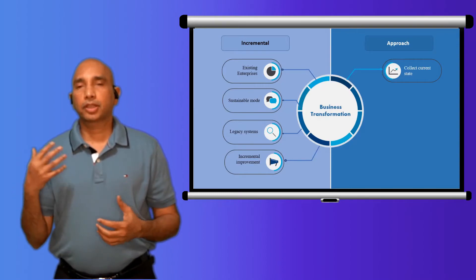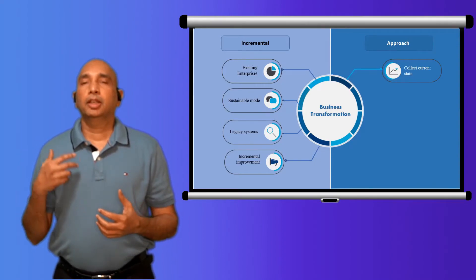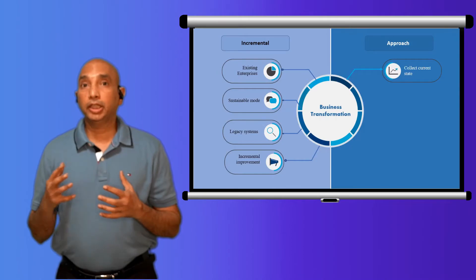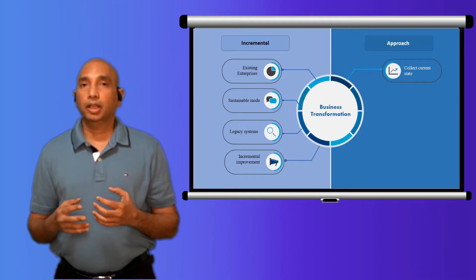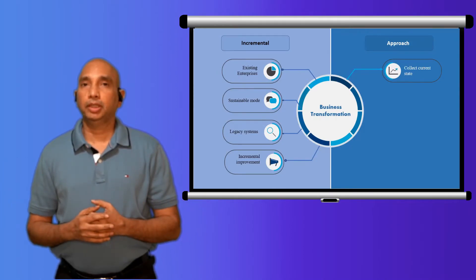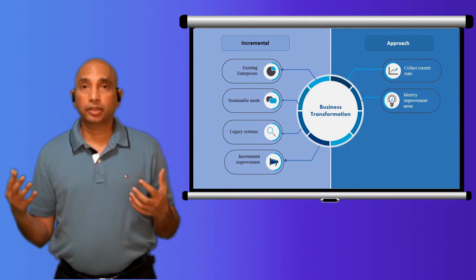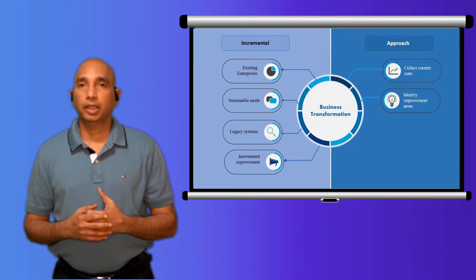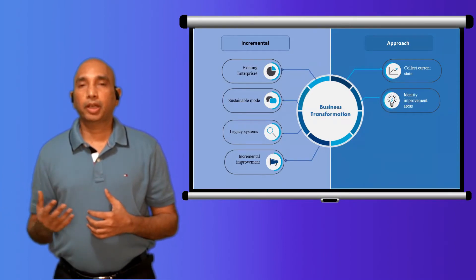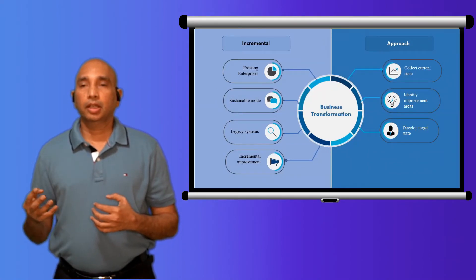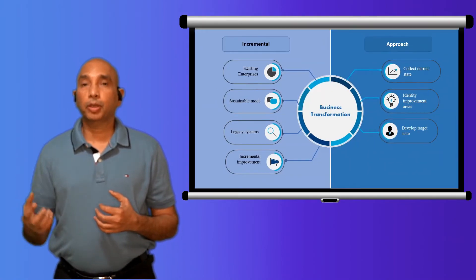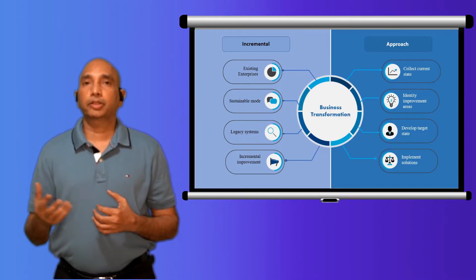So that you can analyze that information and then come up with some detailed target architecture - this is where we want to be, and these are the improvements that we want to make. And then once you identify your target architecture, come up with the implemented solutions that could bring those incremental improvements.